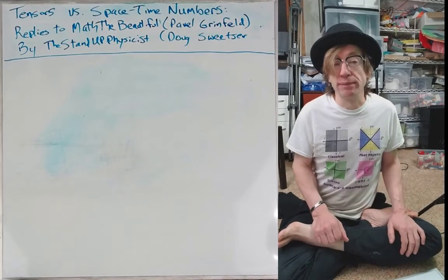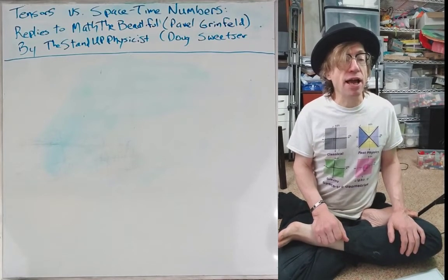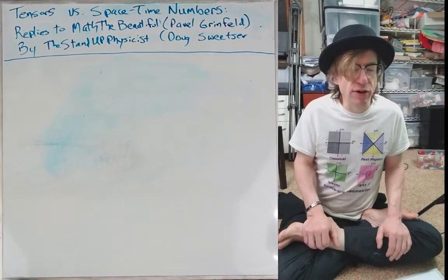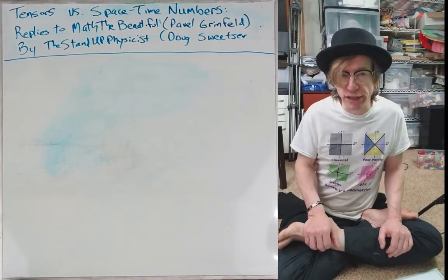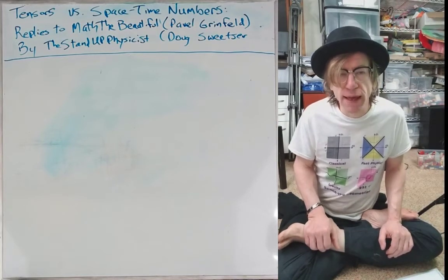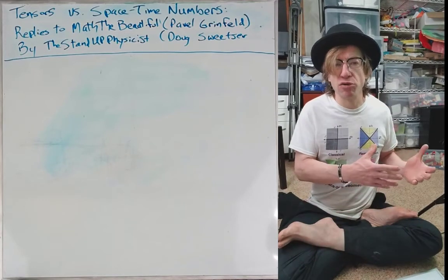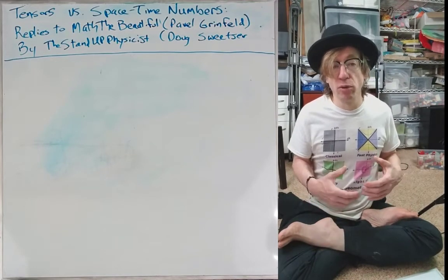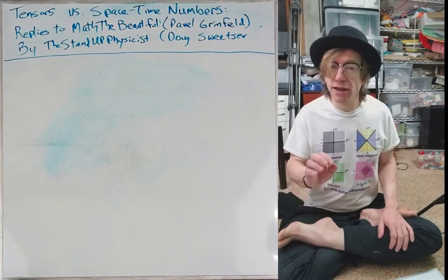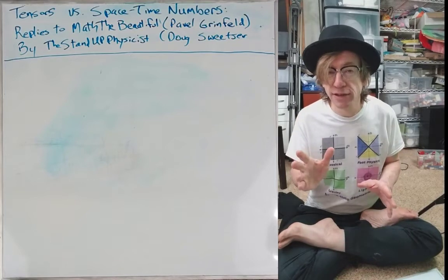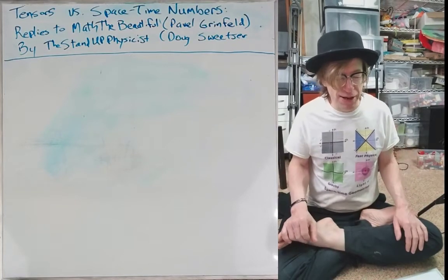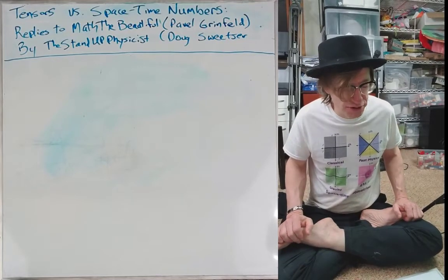But I think there's a better one. And I call them space-time numbers, which is really a technical variation on quaternions. And the differences, I think, are subtle. And so that's why, as I go through his series on tensors, I'm going to do my own thing using the space-time numbers to tell you where I see them ever so subtly, and beautifully different from the more standard approach using tensors.